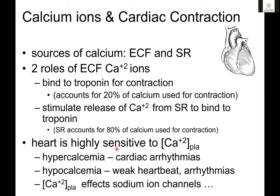Even small changes in plasma calcium can cause changes in extracellular fluid calcium that change the way the heart works. The numbers for calcium sources are: 20% of calcium used for contraction binds directly to troponin, while 80% comes from stimulated release of calcium from the SR to bind to troponin. Although SR calcium accounts for 80%, because that extracellular 20% is even present, small changes in extracellular fluid will strongly affect the heart's contractile ability.